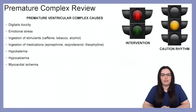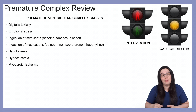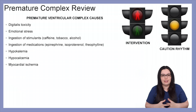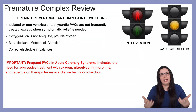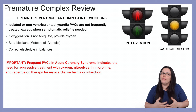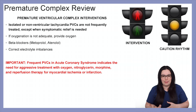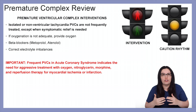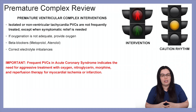Causes of premature ventricular complexes include digitalis toxicity, emotional stress, ingestion of stimulants such as caffeine, tobacco, and alcohol, ingestion of medications especially epinephrine, low potassium, low calcium, and myocardial ischemia. Treatment is dependent on the frequency of PVCs. Isolated or non-ventricular tachycardia PVCs are not frequently treated except when they become symptomatic. If they do become symptomatic, the first thing we can do is provide oxygenation if oxygen saturation is less than 94%. Beta blockers — metoprolol or atenolol — can also be used, and we can correct electrolyte imbalances if that is the underlying cause.